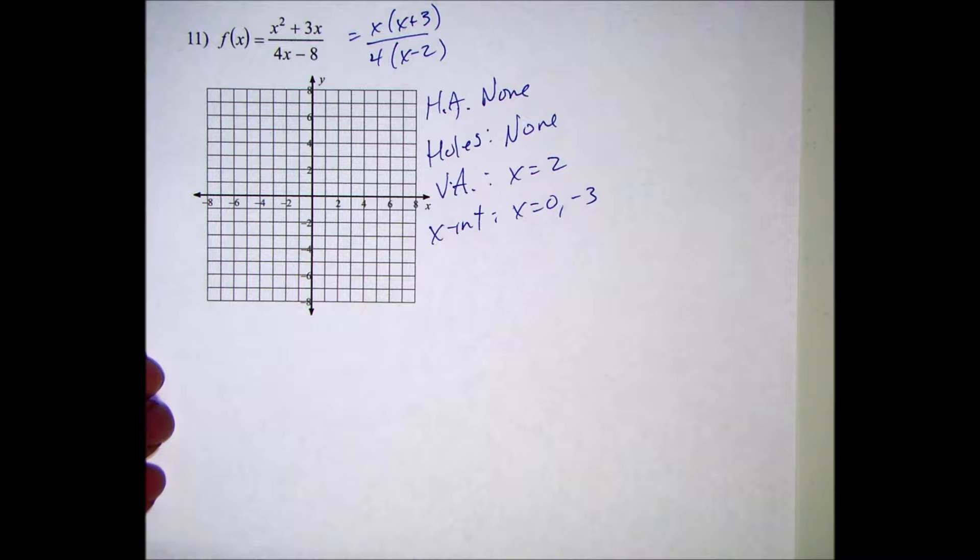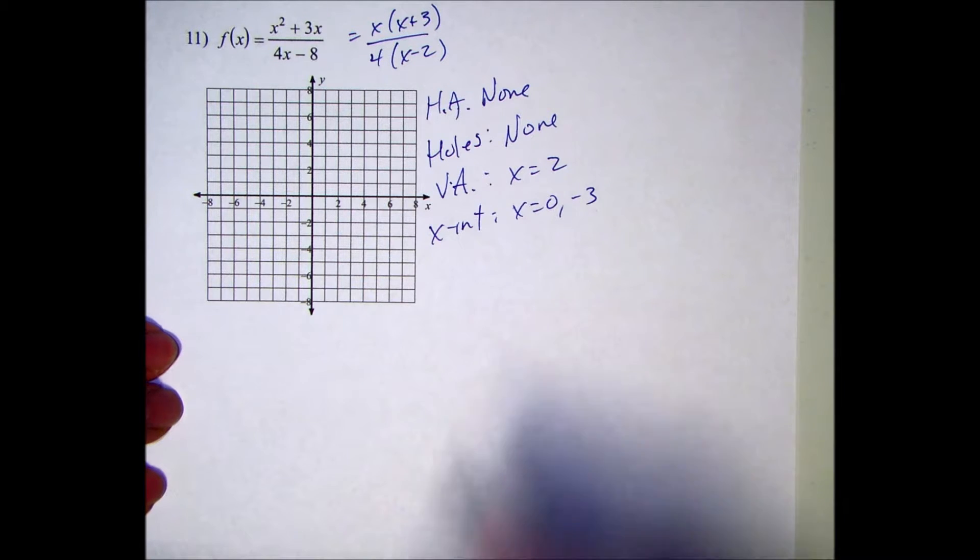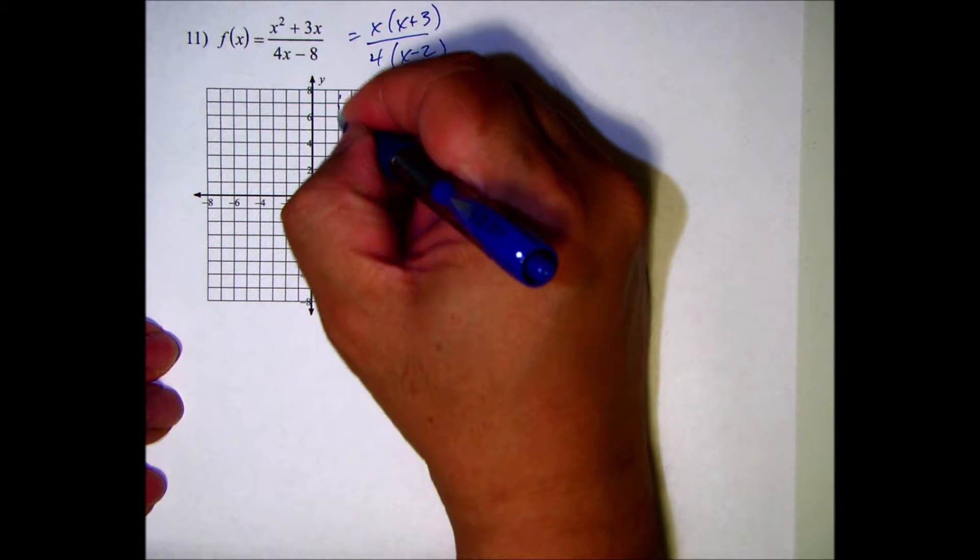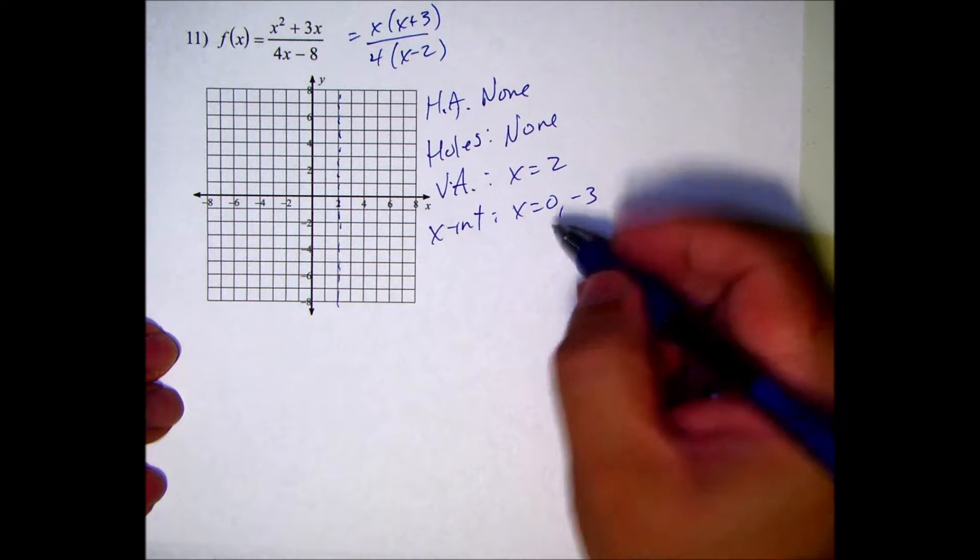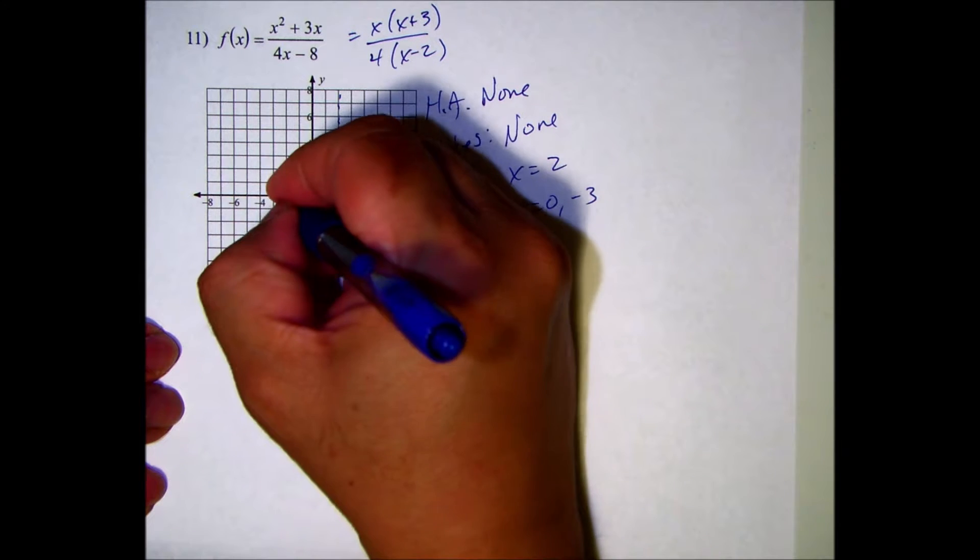All right, let's plot these. Vertical asymptote x equals 2, x-intercepts at x equals 0 and negative 3.